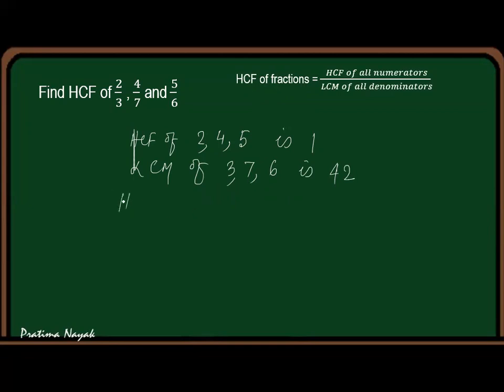Then HCF of 2/3, 4/7, and 5/6 is 1/42. You can check once. HCF of 2, 4, 5 is 1. LCM of 3, 7, 6 is 42.